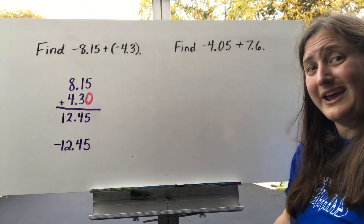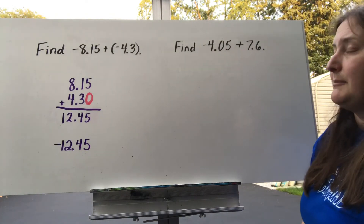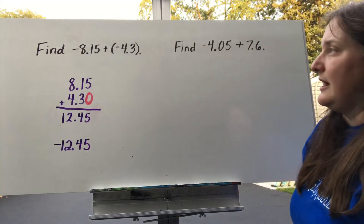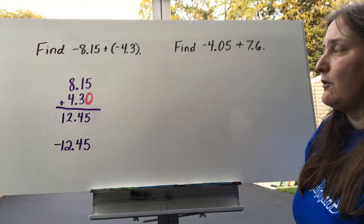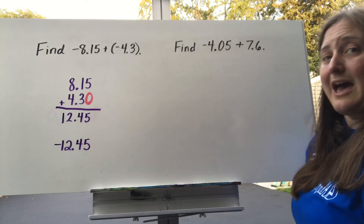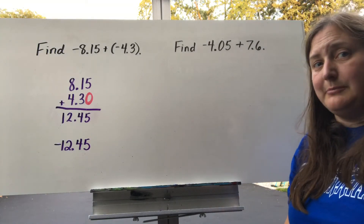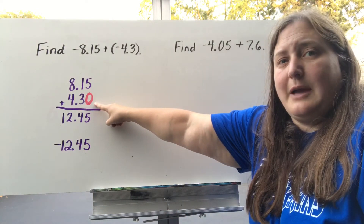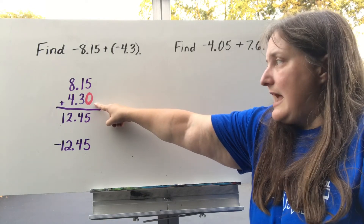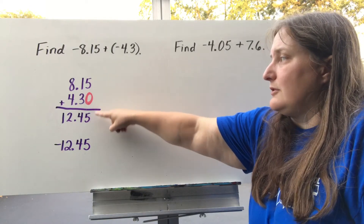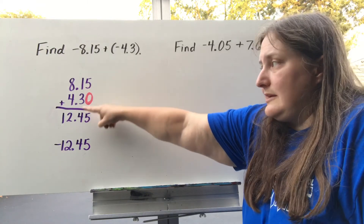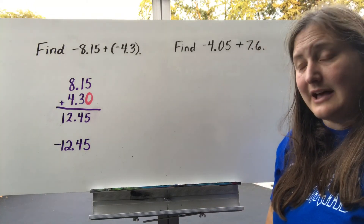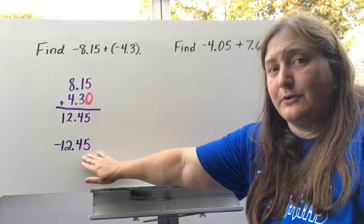Rational numbers are not always fractions — sometimes rational numbers come in the form of decimals. Here we have a problem asking us to find negative 8 and 15 hundredths plus negative 4 and 3 tenths. Whenever I add decimals, I want to line my decimals up just like you would line up buttons going down your shirt. I put a zero in the empty slot as a placeholder. Adding down: 5 plus 0 is 5, 1 plus 3 is 4, bring down the decimal, 8 plus 4 is 12. Because both numbers were negative, my answer is negative 12 and 45 hundredths.